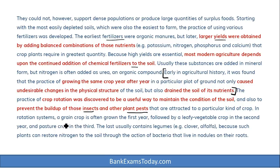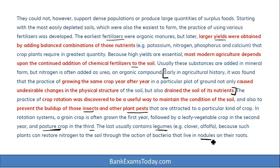In a rotation system, a grain crop is often grown in the first year, followed by leafy vegetables in the second year, and a pasture crop in the third. This circular motion balances the nutrients in the soil. The last crop usually contains legumes, because such plants can restore nitrogen to the soil through the action of bacteria that live in the nodules on their roots — confirming the answer to the last question.